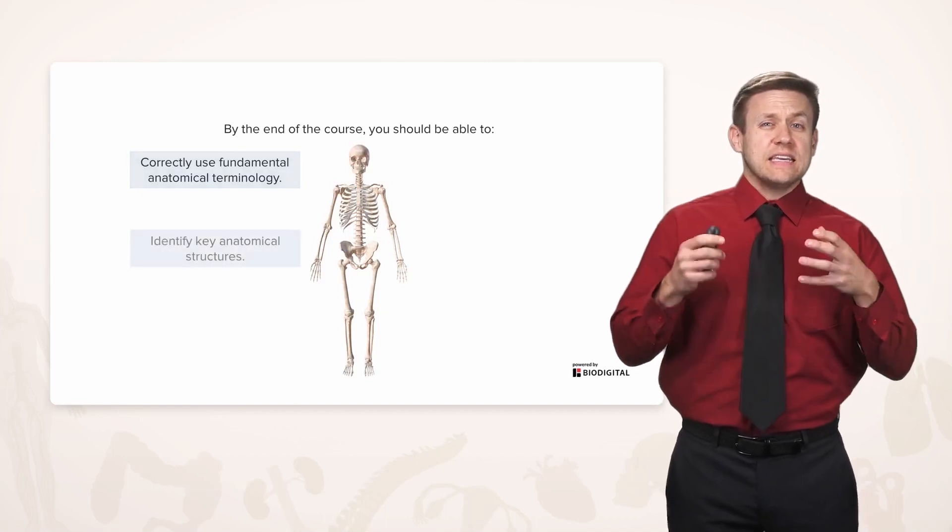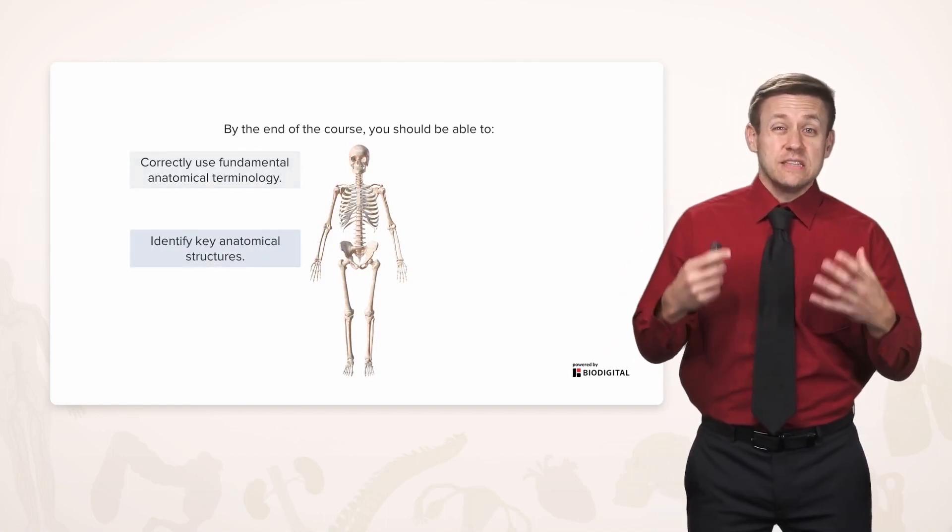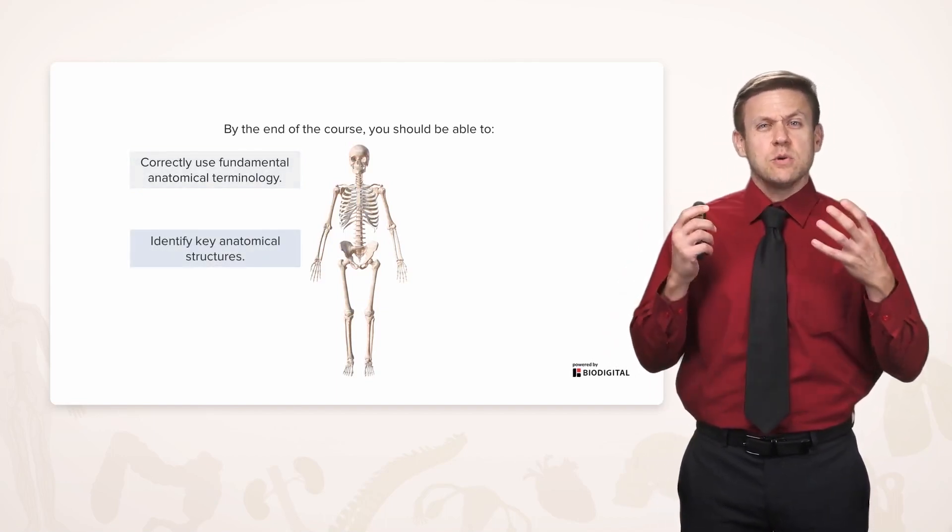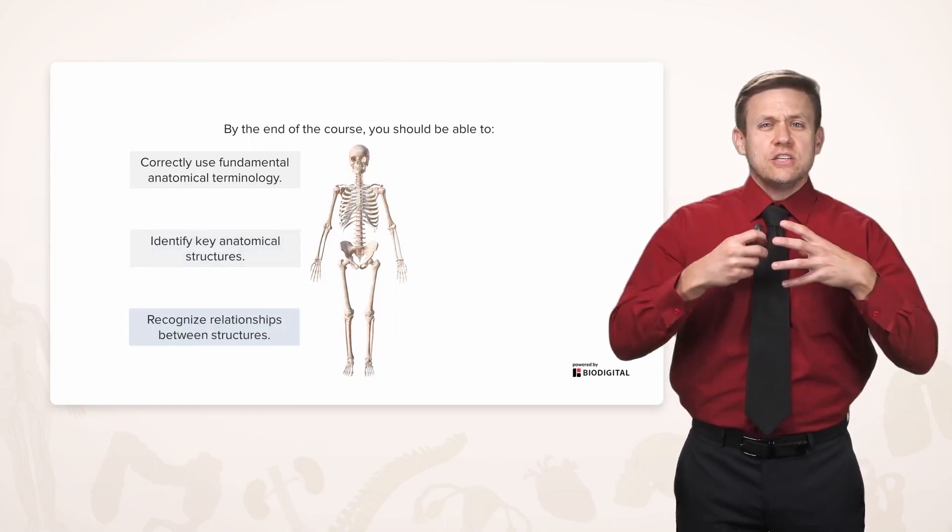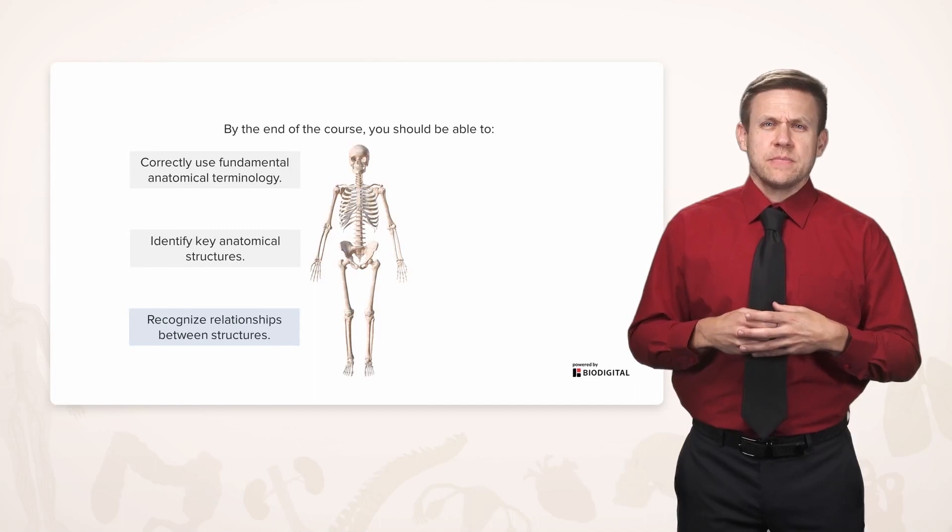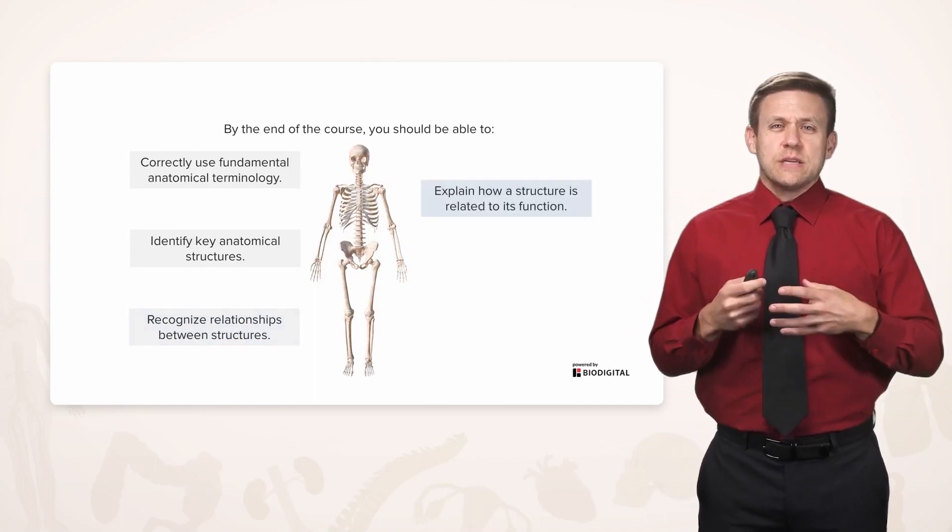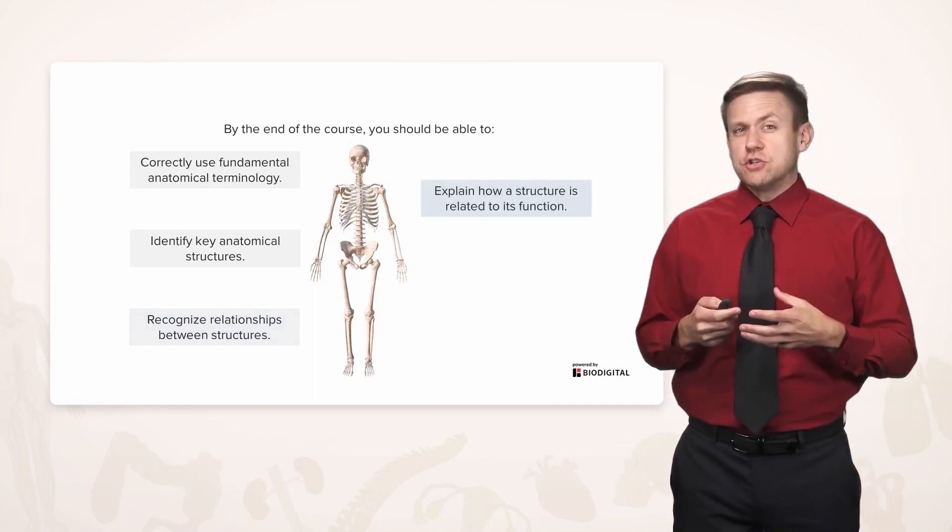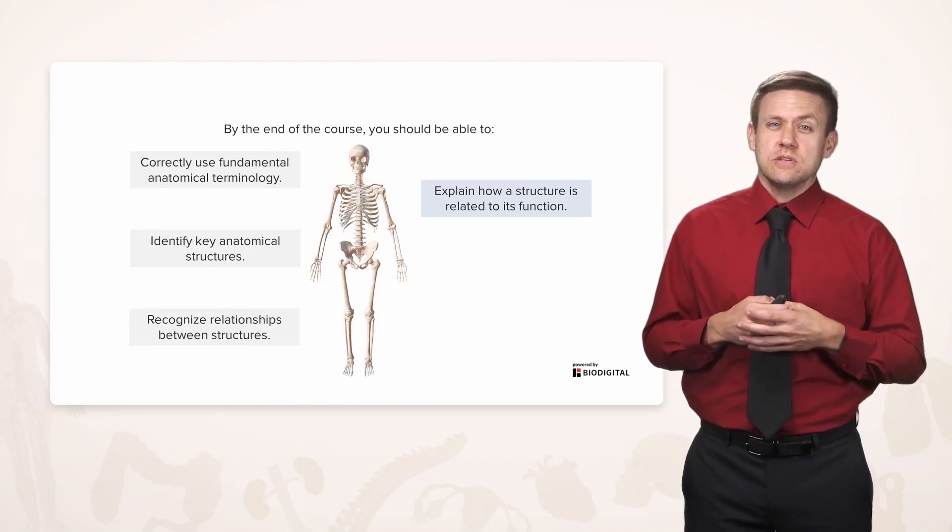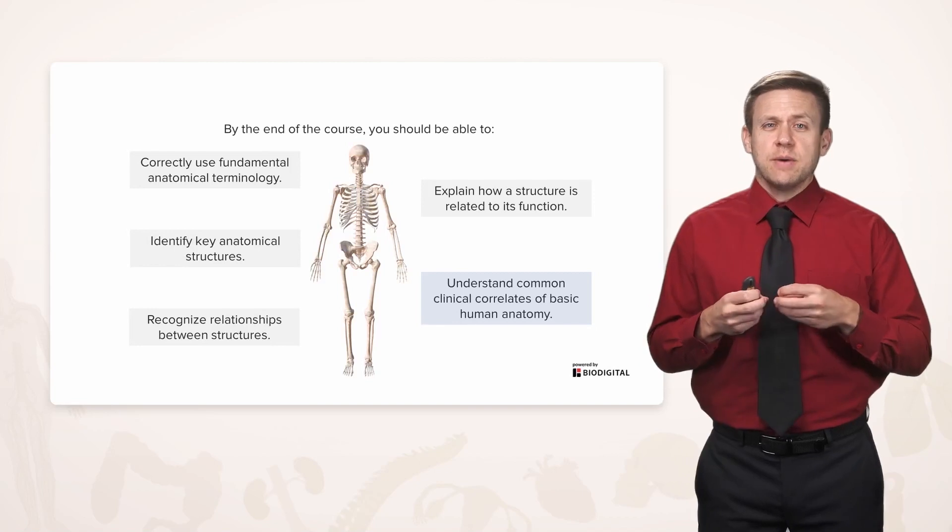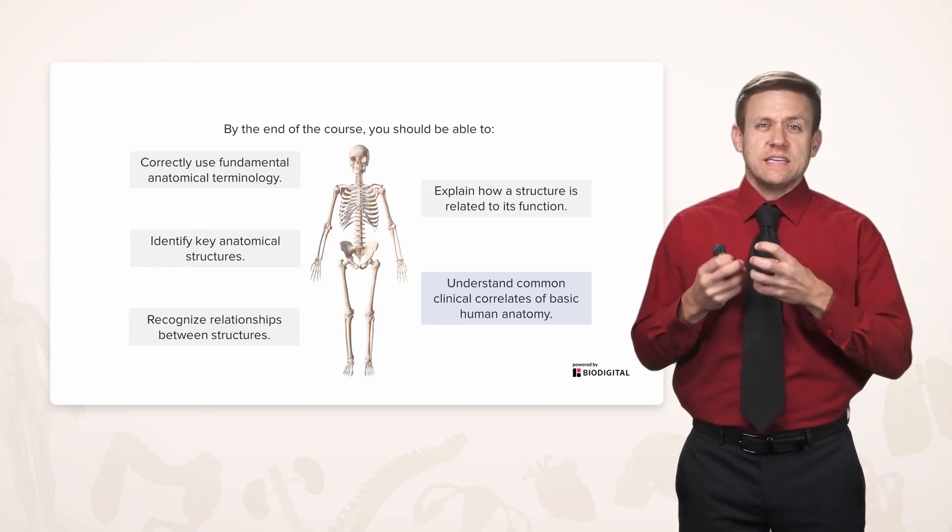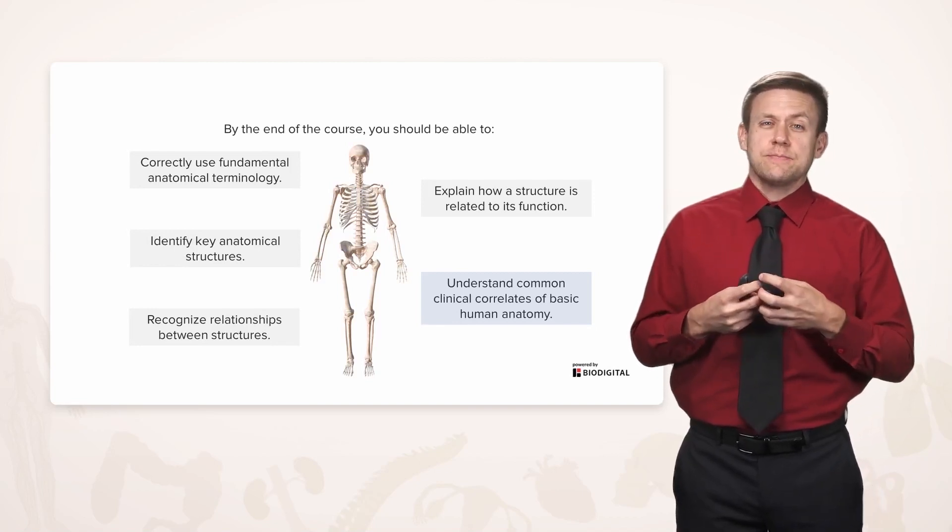We're also going to talk about the key anatomic structures, not every little bit of the human body, but the stuff that's most clinically relevant. We're going to recognize the relationships between structures, because that's really related to how a structure has a function, which is also something that's important to know as we go along. Then finally, every so often, we're going to talk about common correlates where the anatomy and clinical situations come together.